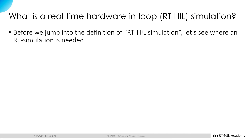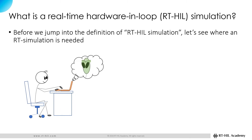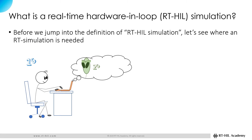Now, before we jump into the definition of Real-Time Hardware in the Loop, or RT Hill Simulation, let's see where a real-time simulation is needed. Let's assume that you want to Skype with a UFO who lives in a different world — not just on a different planet, but in a parallel universe where the time runs 2 times faster than it does in our world. That means for each 1 second that passes in our world, 2 seconds pass in the world of the UFO.